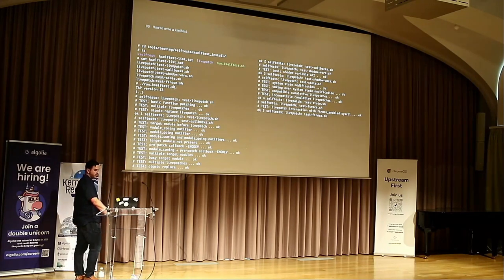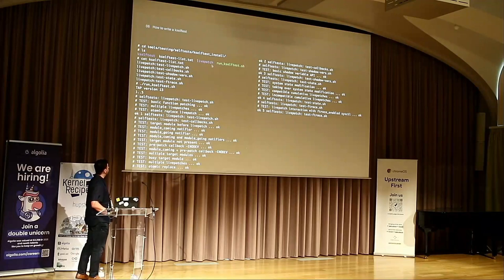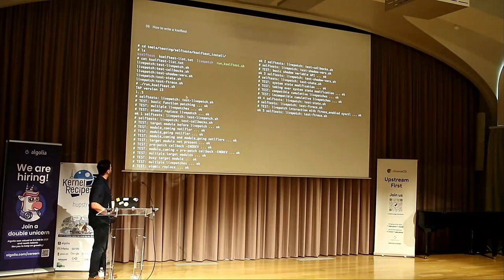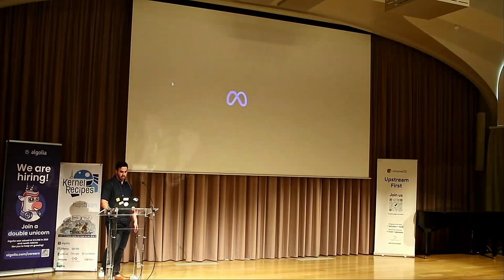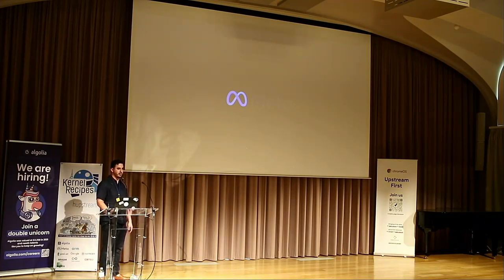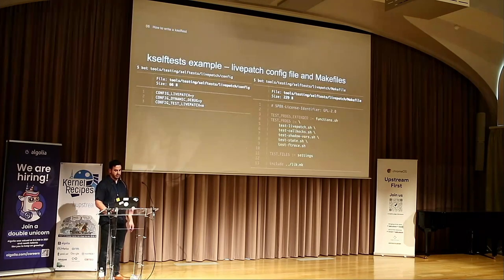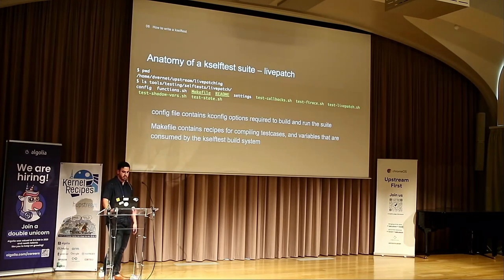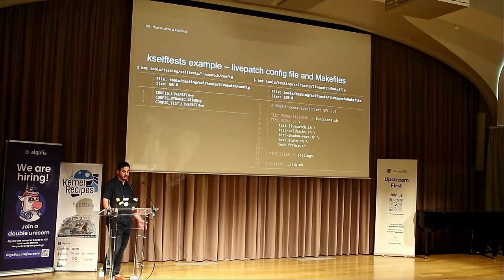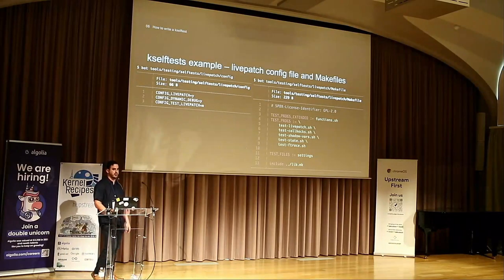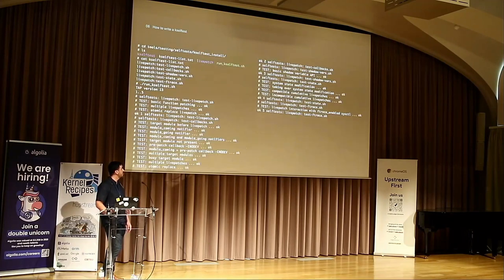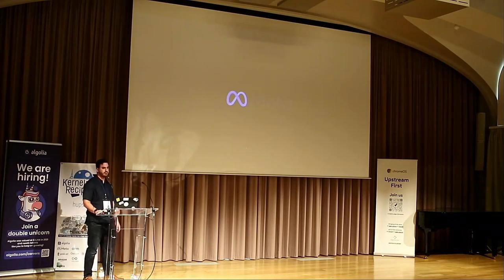This is how you run the self-tests once they've been installed — you go to kselftest_install and then run the self-test. Super simple. If you want to add more complex build stuff, it's really similar. I would look at the cgroup approach, and honestly any of the others — they all do things a little bit differently. Copy-paste works well for kselftest. And yeah, that's it.